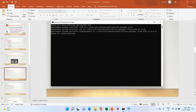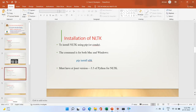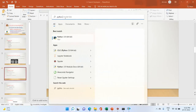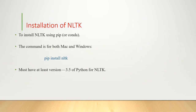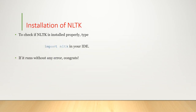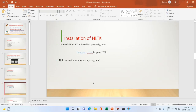After installation is completed, you must have at least Python version 3.5 for NLTK — here Python 3.9 is installed. The command for both Mac and Windows is pip install nltk. To check if NLTK is installed properly, type import nltk in your IDE. There is still a bunch of stuff to download and install in your IDE.